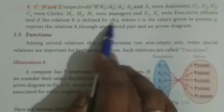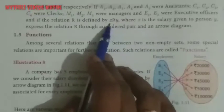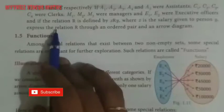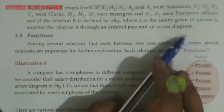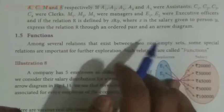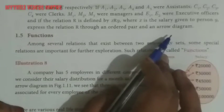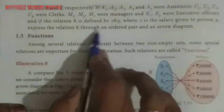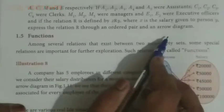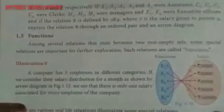Now if the relation R is denoted by x, R, y, where x is the salary given to person y, express the relation R through an ordered pair and an arrow diagram. An ordered pair means we write the relation finally. We will see this problem.